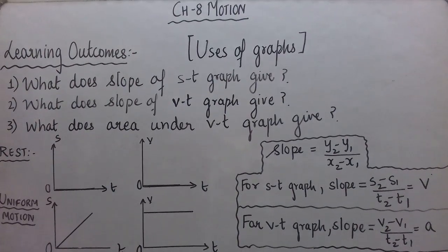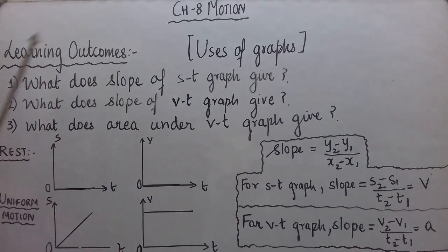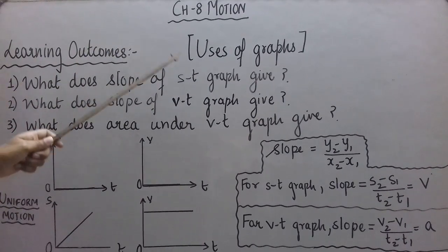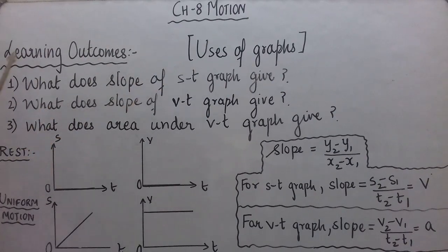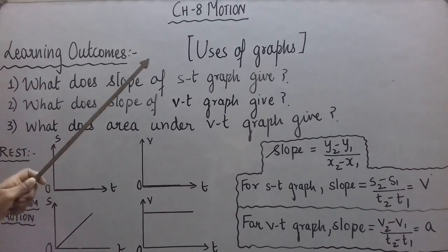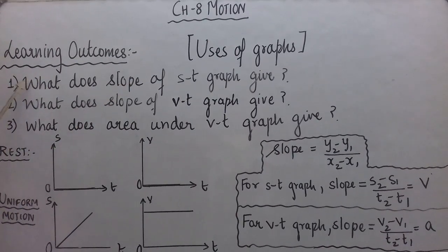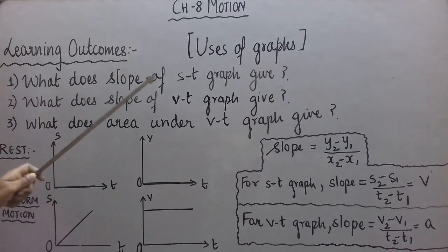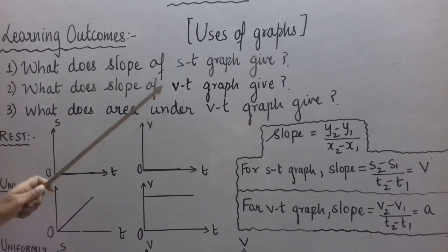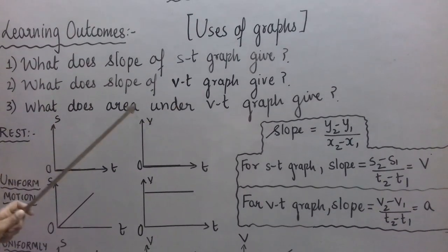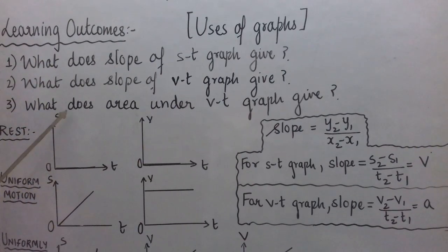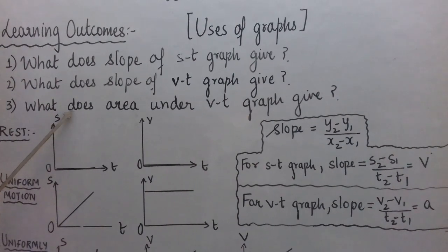Hello students. In this video we are going to continue with chapter 8, Motion. The learning outcomes of this video are based on the uses of graphs: what does the slope of an ST graph give, what does the slope of a VT graph give, and what does the area under a VT graph give. These three are the learning outcomes you are going to achieve after this video.